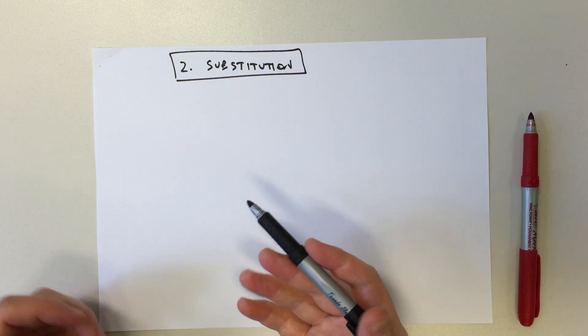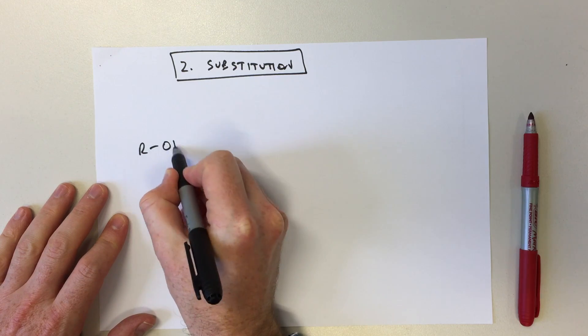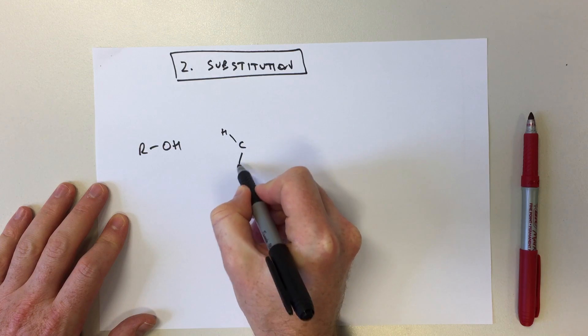The next reaction you need to be able to do curly arrows for is a simple substitution reaction. So imagine we've got an alcohol here that can react with something like iodomethane.